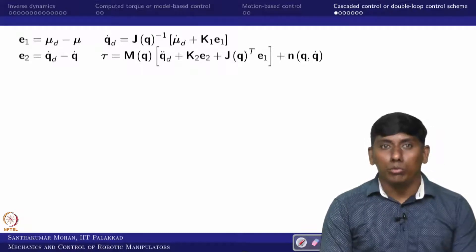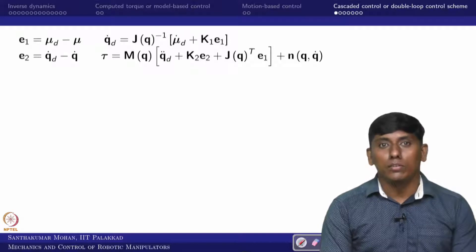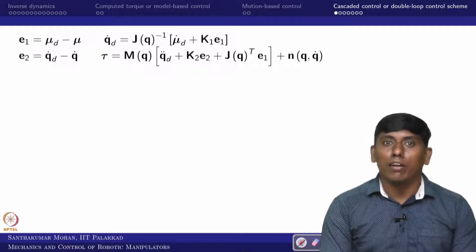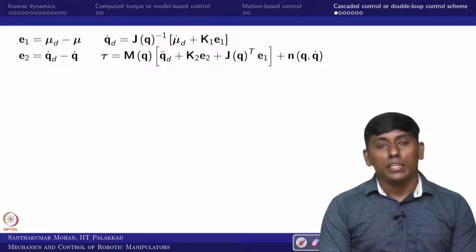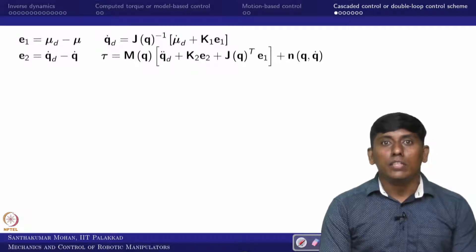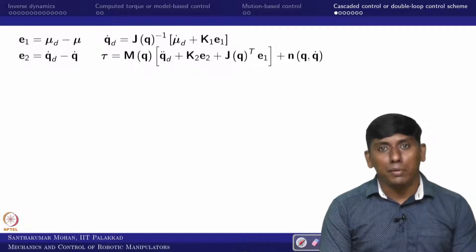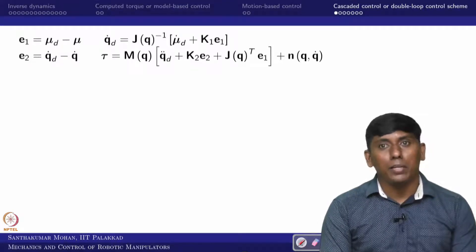In the theory we have seen there would be two errors. E1 is mu_desired minus mu, and E2 is q_dot_desired minus q_dot, where q_dot_desired is not directly derived from inverse kinematics or inverse differential kinematics. The outer loop gives the desired value for the inner loop — q_dot_desired is obtained from the outer loop, written as q_dot_desired equals Jacobian inverse times mu_dot_desired plus k1*E1.